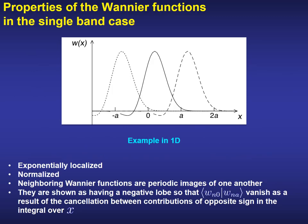All these properties can be visualized on this cartoon in a simple one-dimensional case. The unit cell lattice constant is defined by a lowercase a. We can see in this sketch how the Wannier functions are peaked on a particular unit cell in real space, how they are normalized and exponentially localized, and how neighboring Wannier functions are periodic images of one another. Clearly, they also show a negative lobe so that the scalar product between neighboring Wannier vanishes due to the cancellation between contributions of opposite sign in the integral over x.